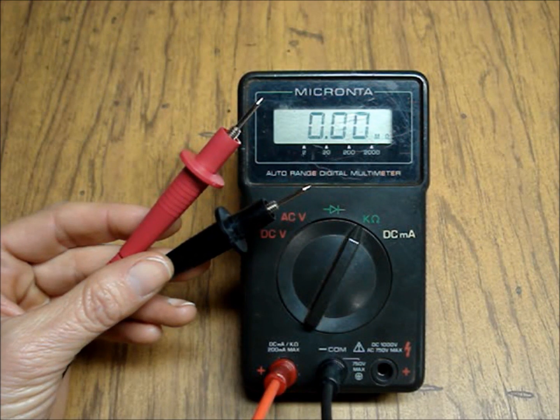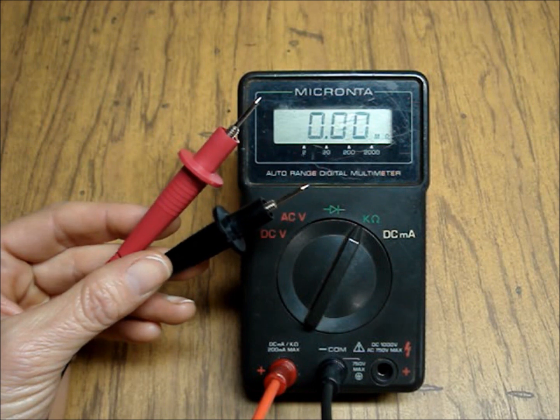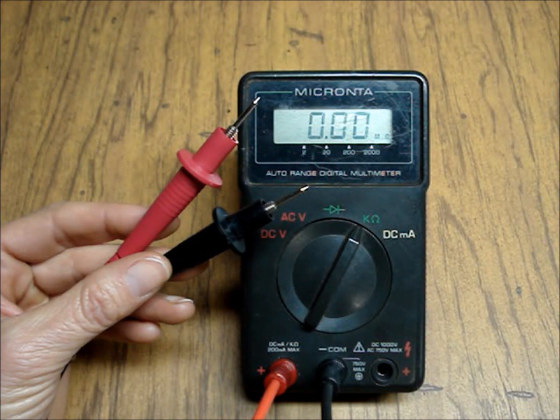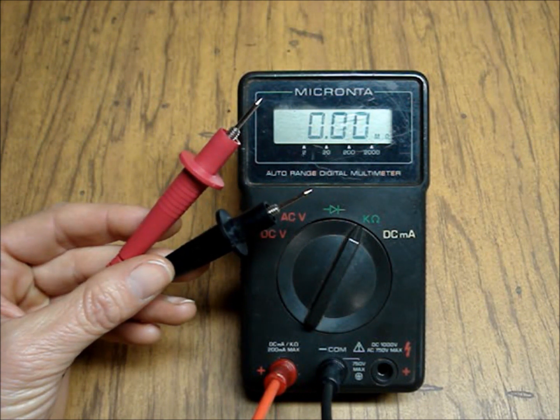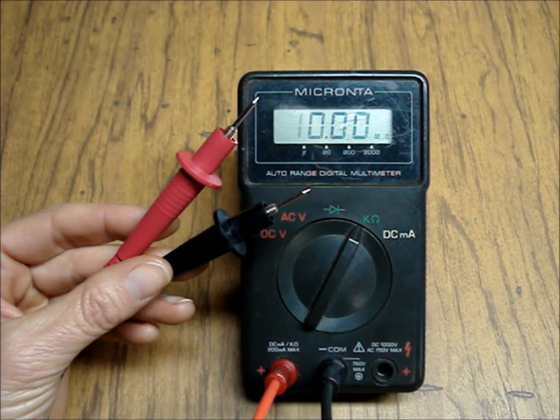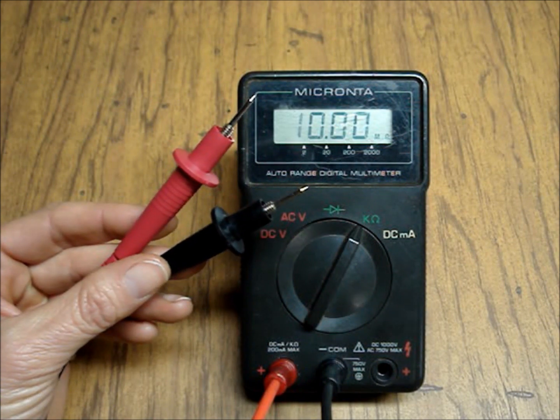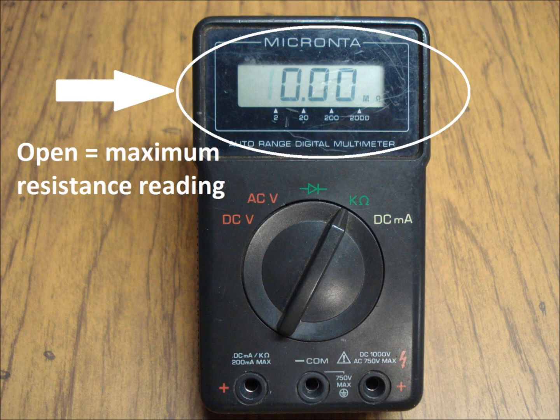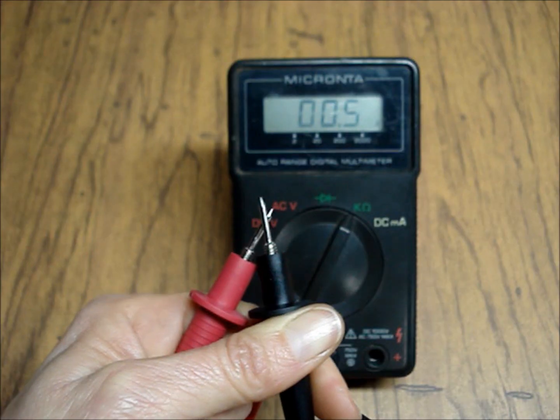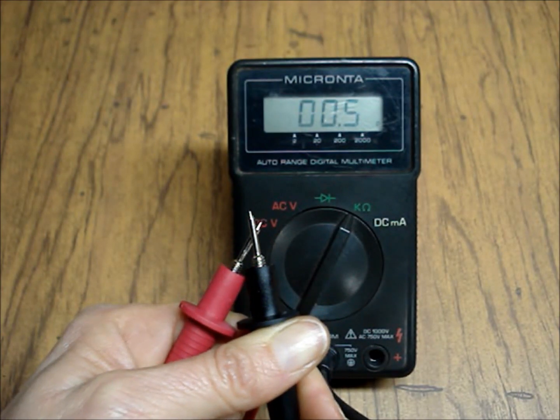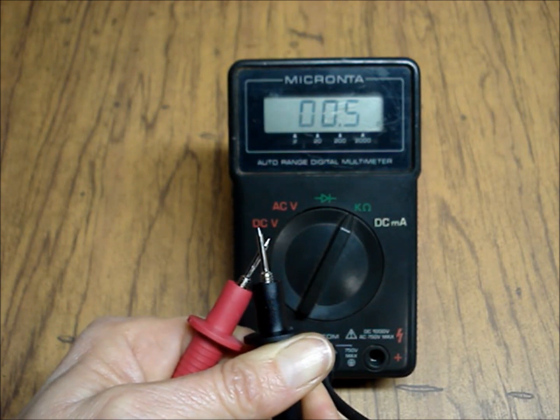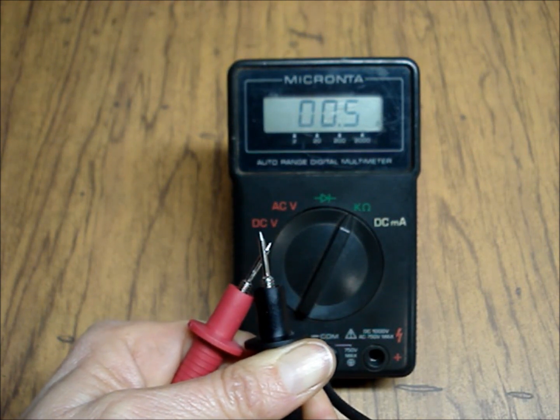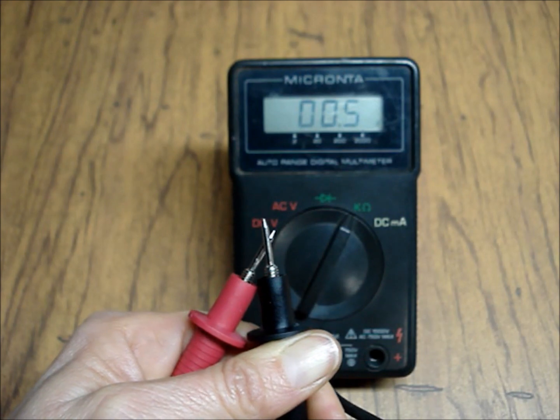With the leads apart, take note of the reading on the display. This reading represents the largest range of resistance. I call that open. Some people also call it infinity. Put the leads together, the display shows the smallest amount of resistance that the multimeter will read. Mine shows about a half an ohm.